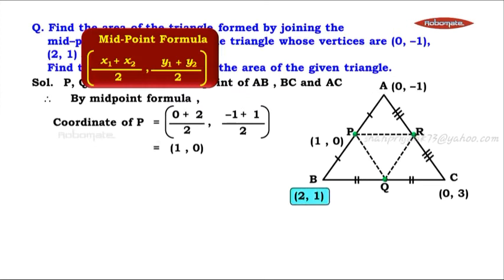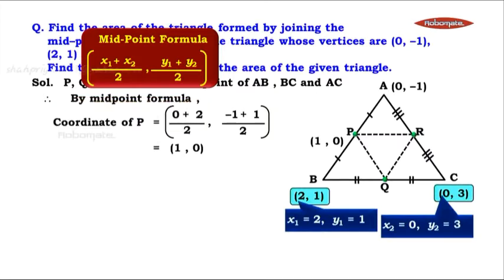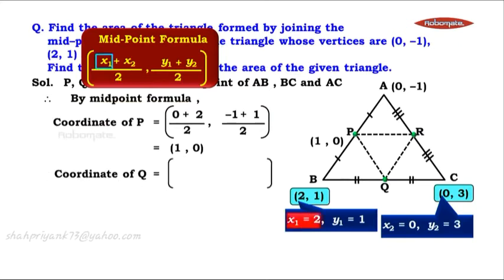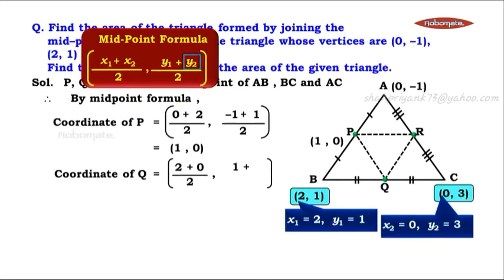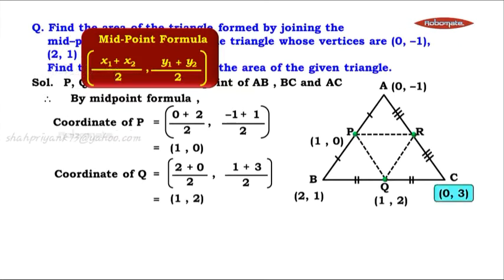Second, point B is x1, y1 and point C is x2, y2 because Q is the midpoint of segment BC. Applying the midpoint formula: (2 + 0)/2, (1 + 3)/2. This gives us 2/2 = 1, and 4/2 = 2. So coordinates of Q are (1, 2).